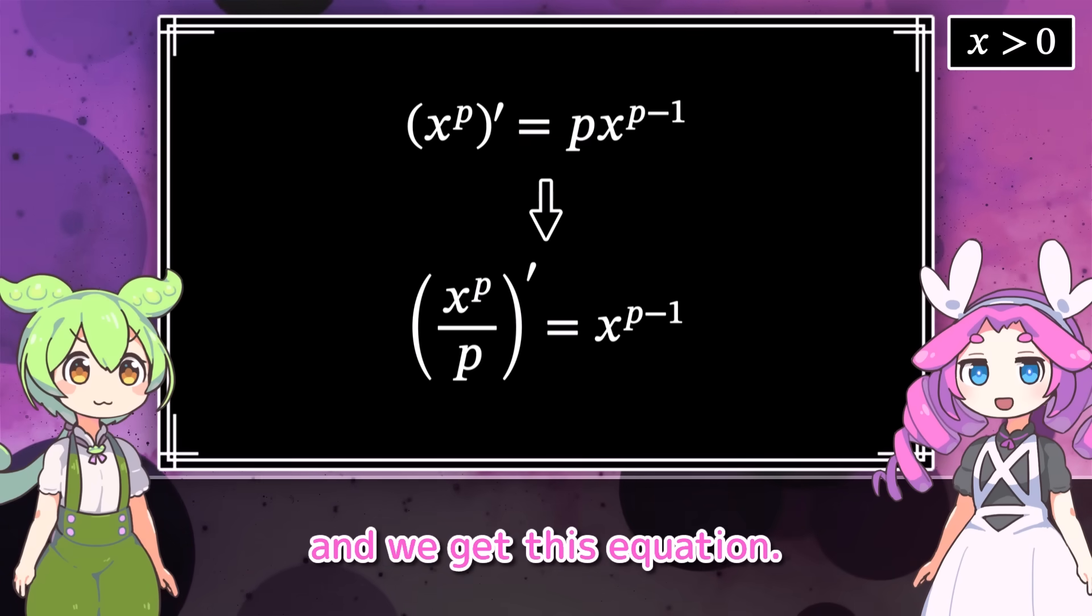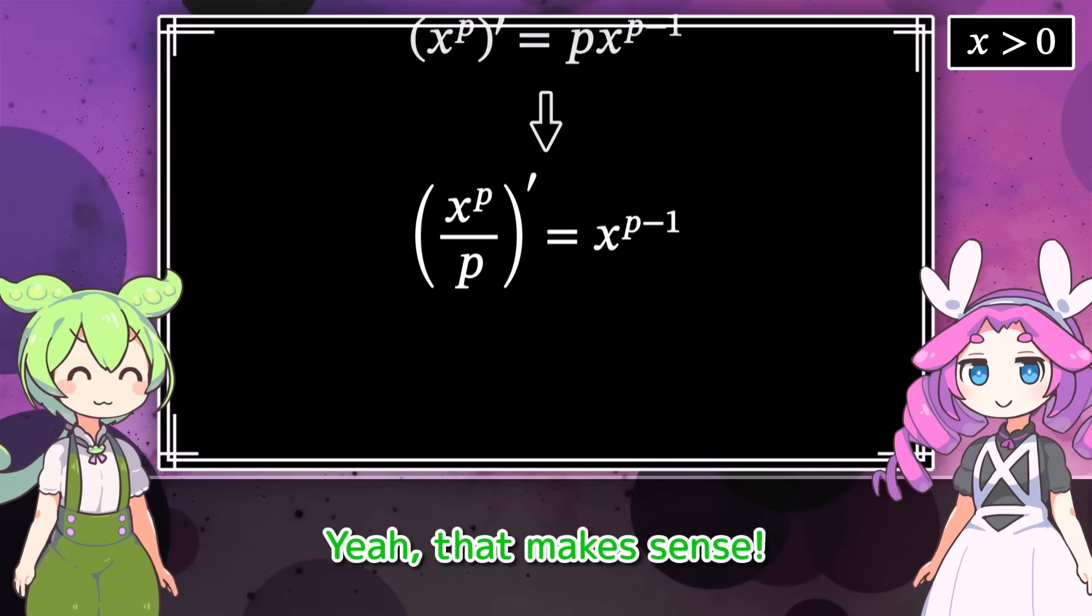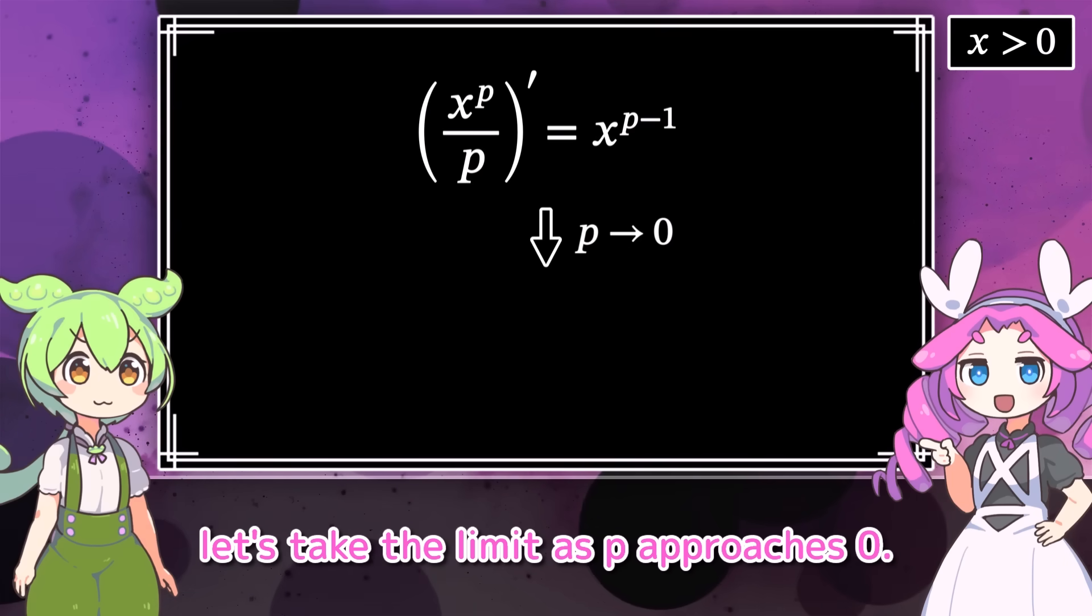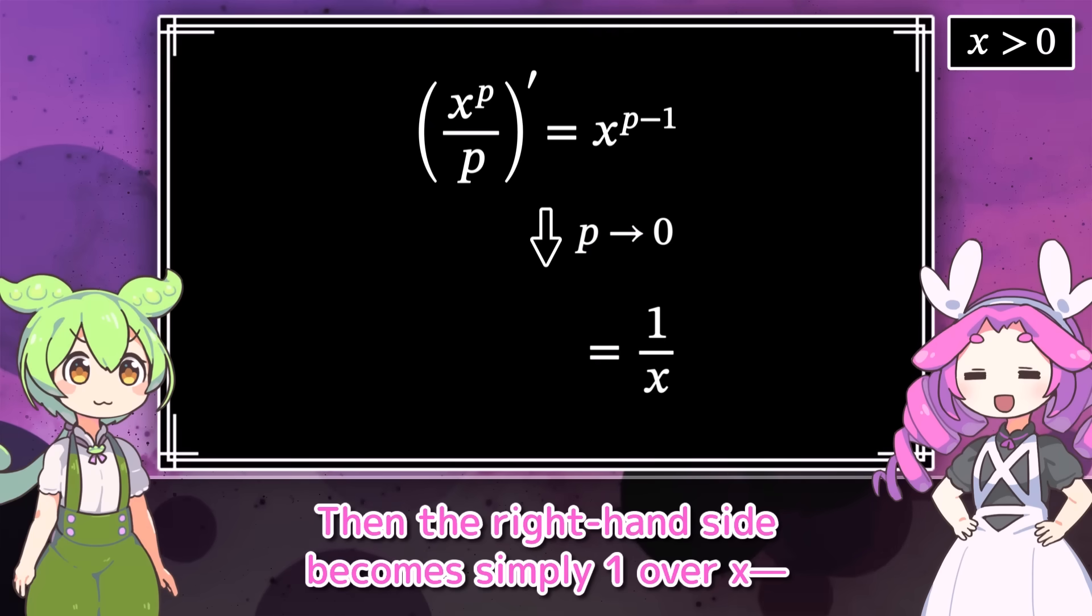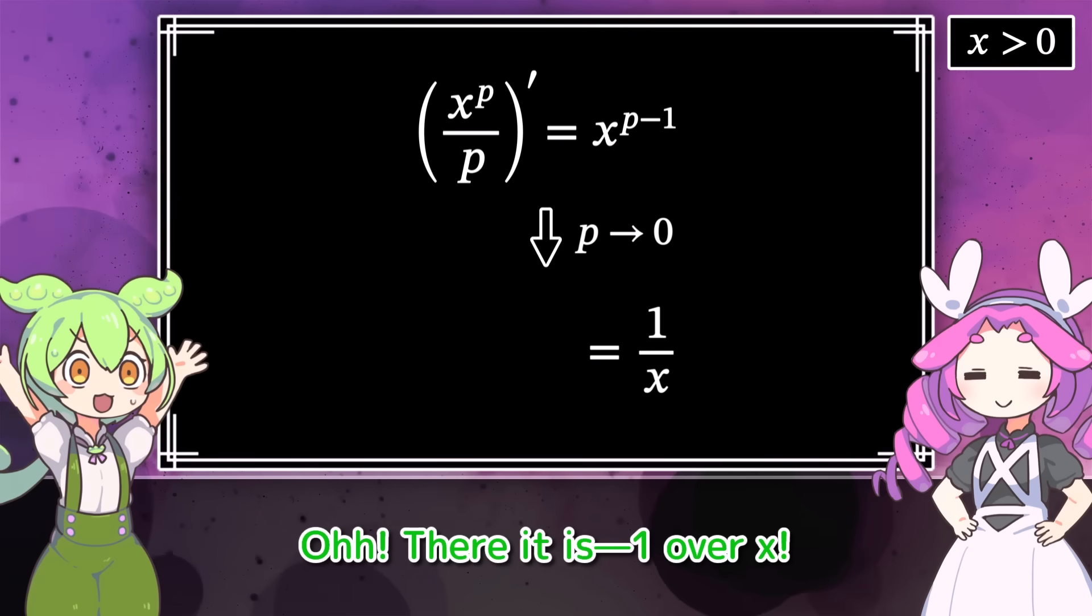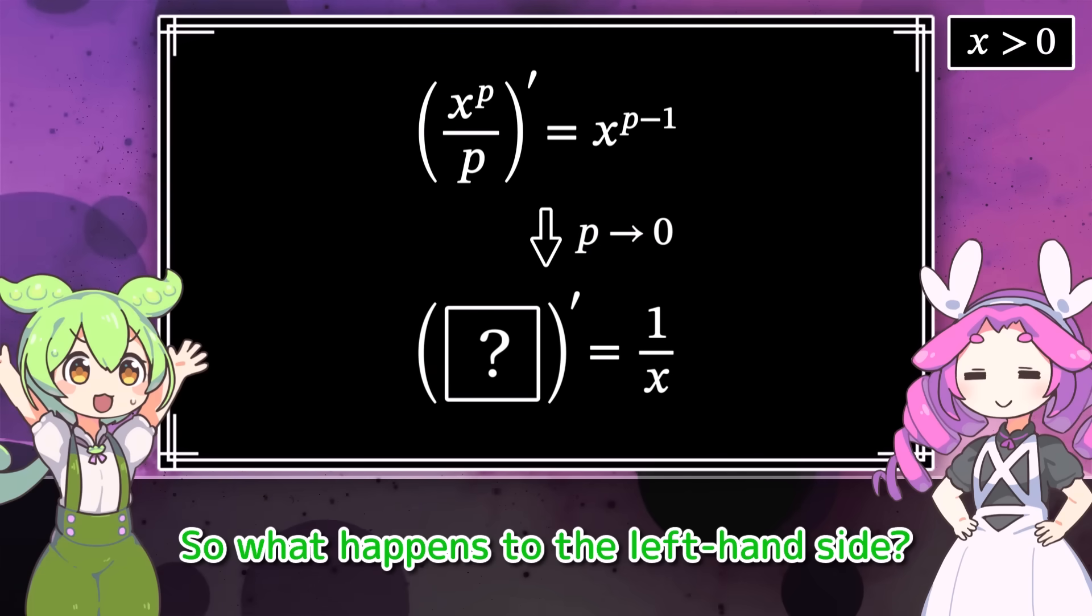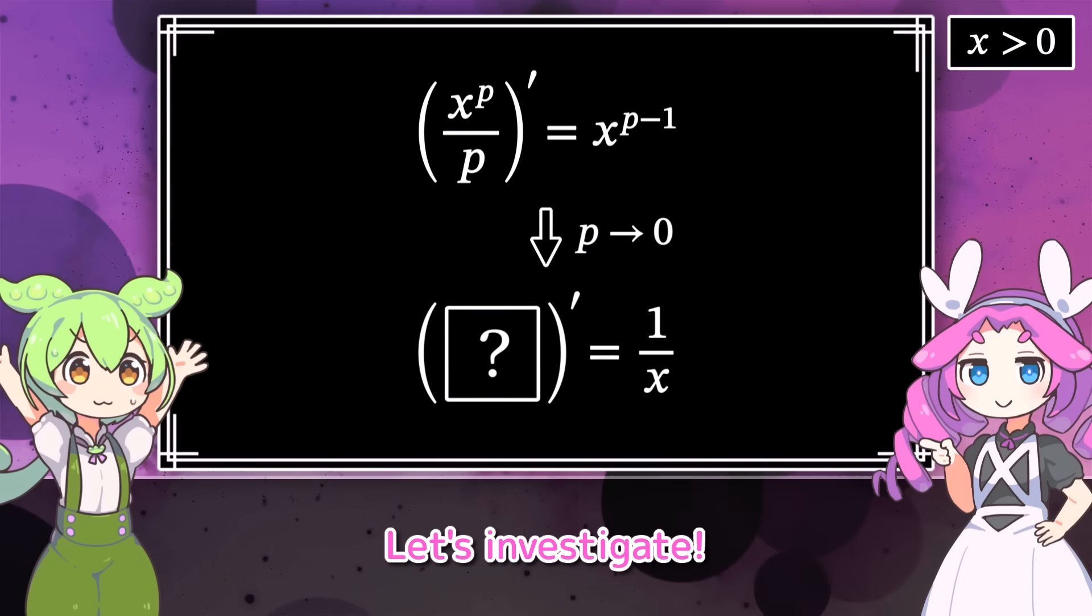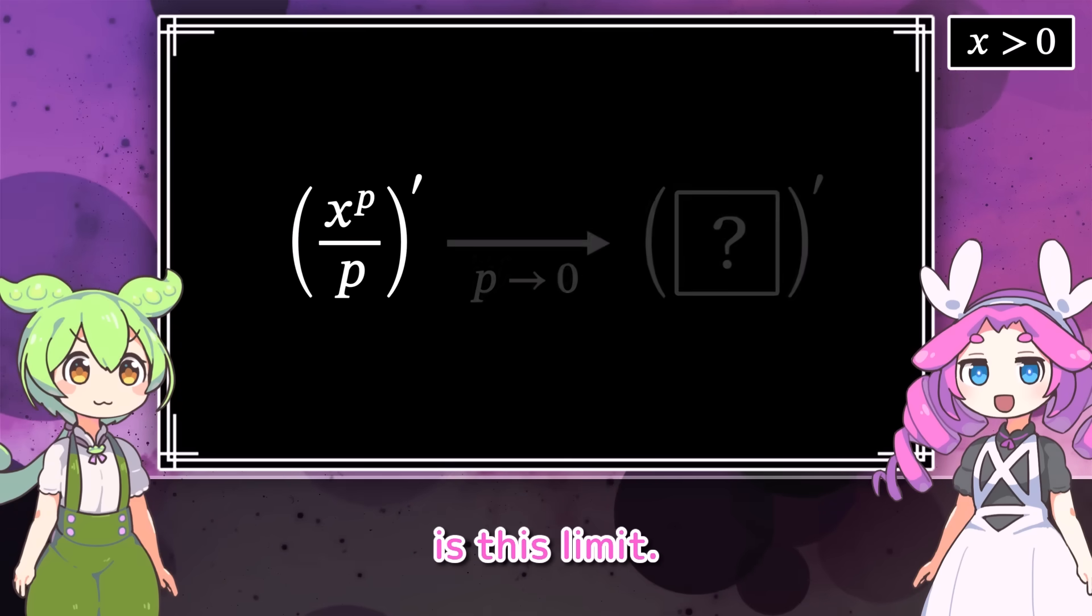Then divide both sides by p, and we get this equation. Yeah, that makes sense. Instead of plugging in p equals 0 directly, let's take the limit as p approaches 0. Then the right-hand side becomes simply 1 over x. It's no longer 0. Oh, there it is, 1 over x. So what happens to the left-hand side? I'm super curious now. Let's investigate.